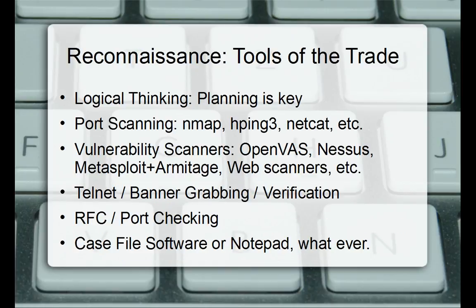Some tools of the trade: logical thinking and planning is key. You have to have all your ducks in a row to successfully audit or pen test a network. For port scanning we're going to be using nmap, hping3, and netcat — we actually had a request for a netcat tutorial, so that's already included. You can also use telnet and similar tools. Vulnerability scanners include OpenVAS, which is free, and Nessus — there's a community version and a paid version, though the community version really isn't great.